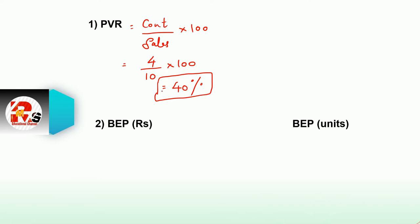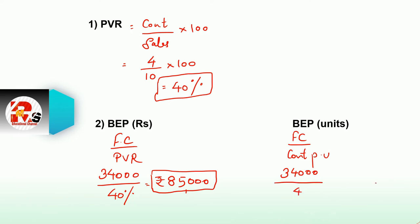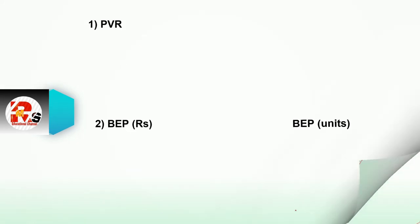PVR (Profit Volume Ratio): contribution divided by sales multiplied by 100. Contribution per unit is 4, sales per unit is 10, so PVR = 4/10 × 100 = 40%. BEP in rupees: fixed cost divided by PVR = 34,000 divided by 40% = 85,000. BEP in units: fixed cost divided by contribution per unit = 34,000 divided by 4 = 8,500 units.